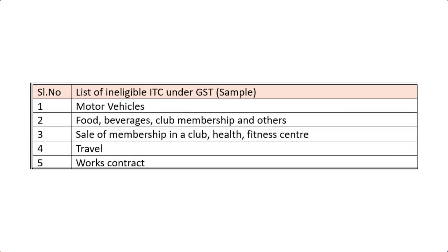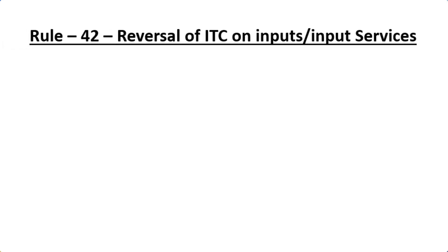You will see on the screen the sample of the negative list: motor vehicle, food and beverages, club membership, and others. The next is sale of membership in a club, health and fitness center. Fourth is towards travel, and fifth is works contract. Now there are three scenarios under which ITC has to be reversed as per Rule 42. Let us understand this with a simple example of each scenario.